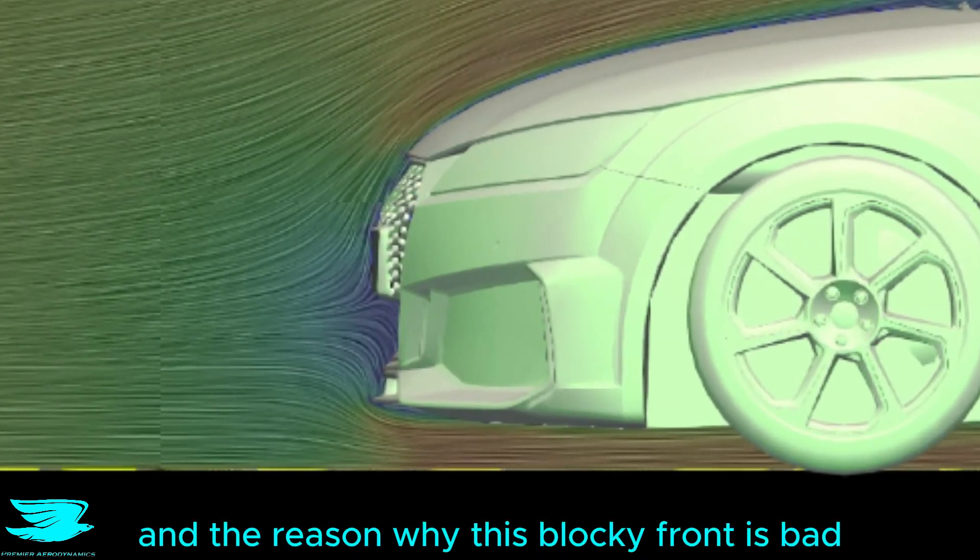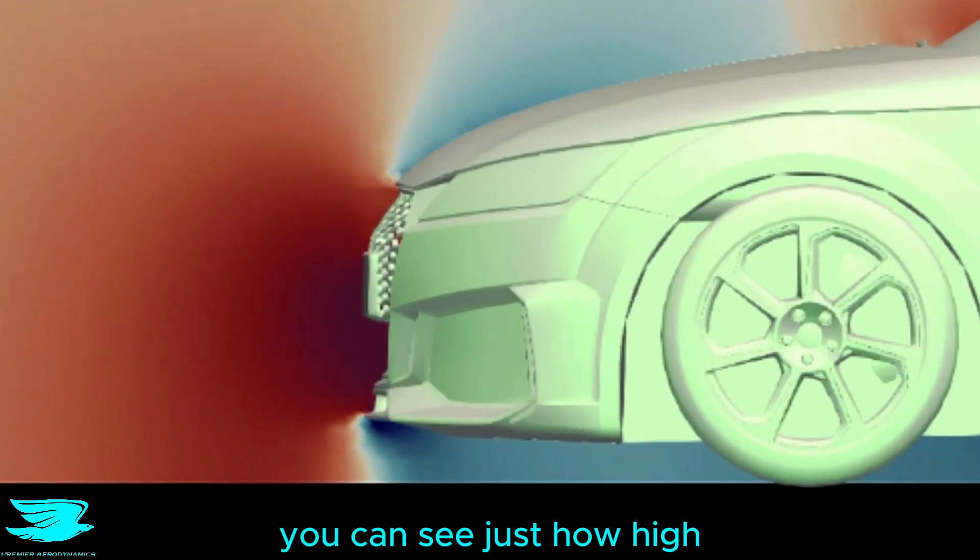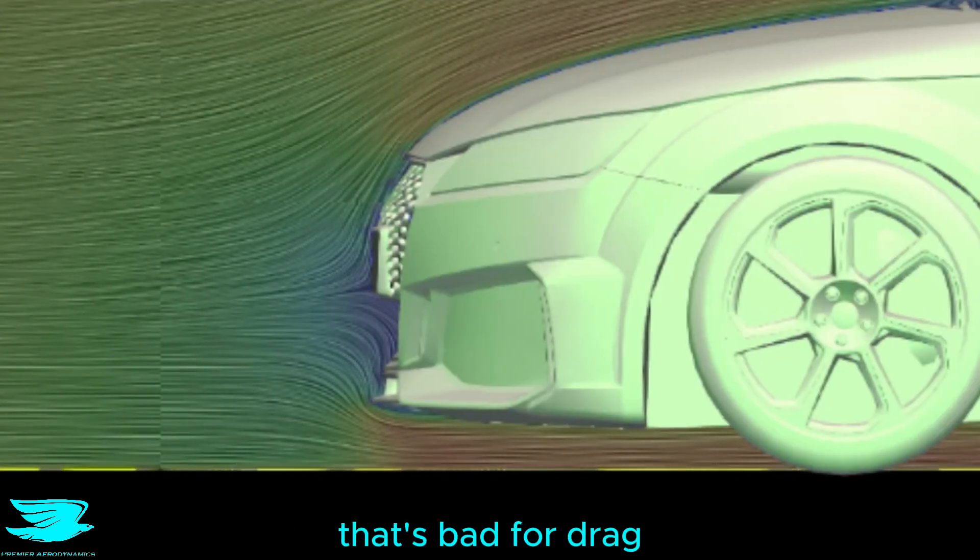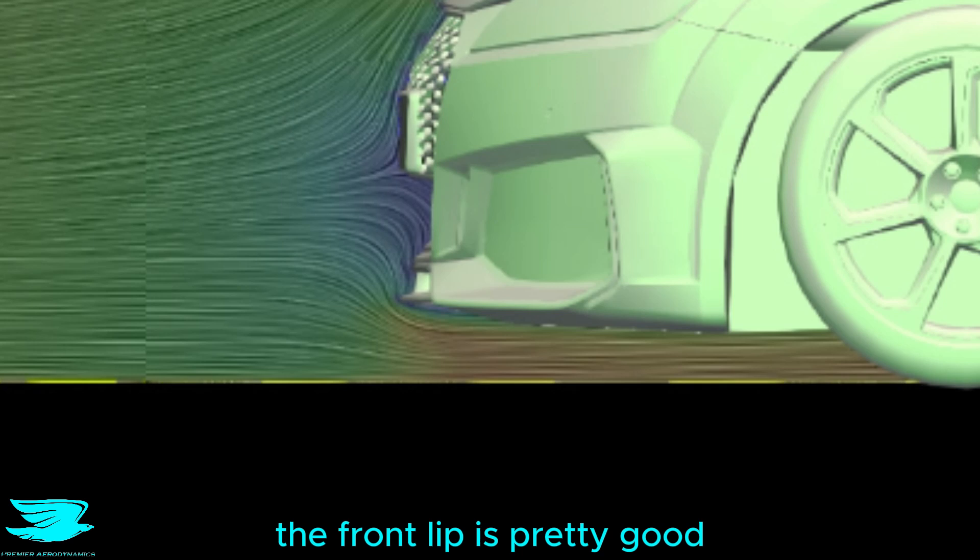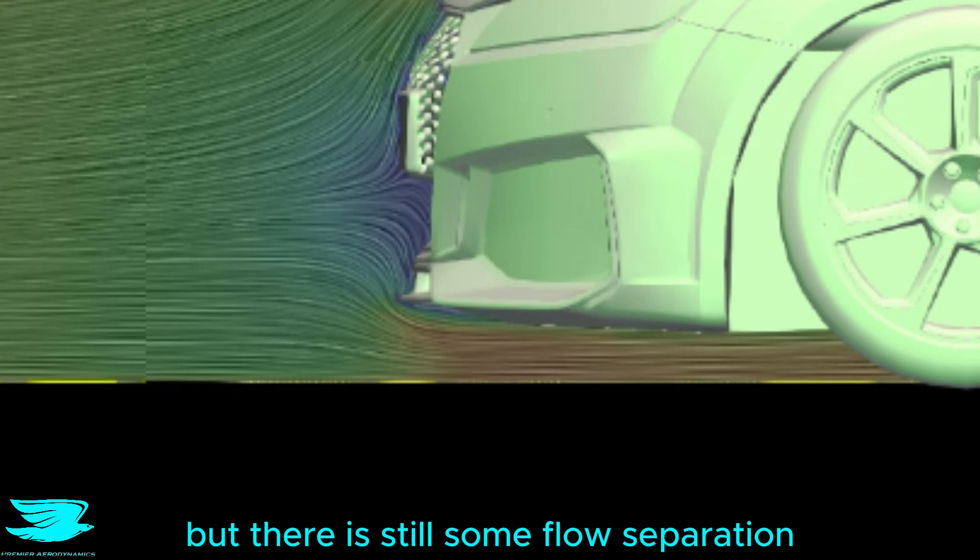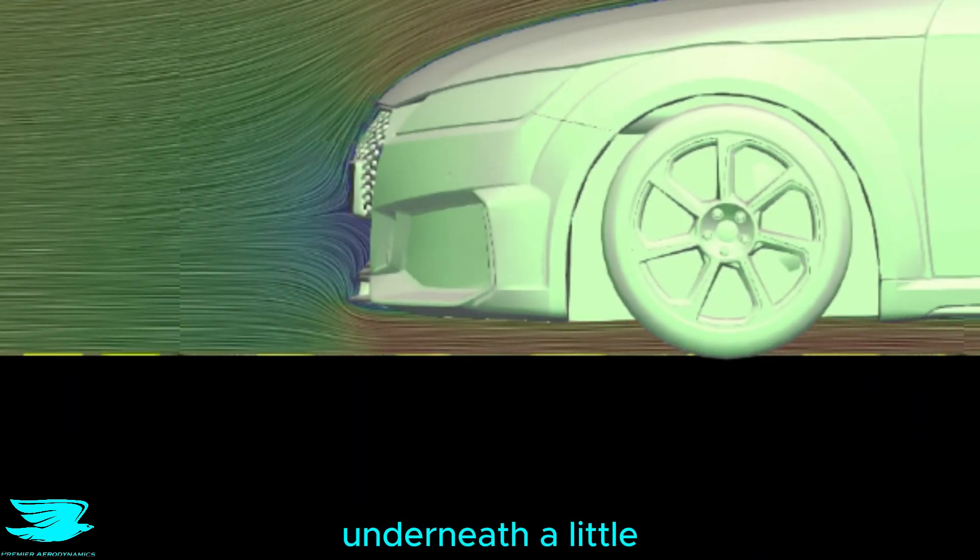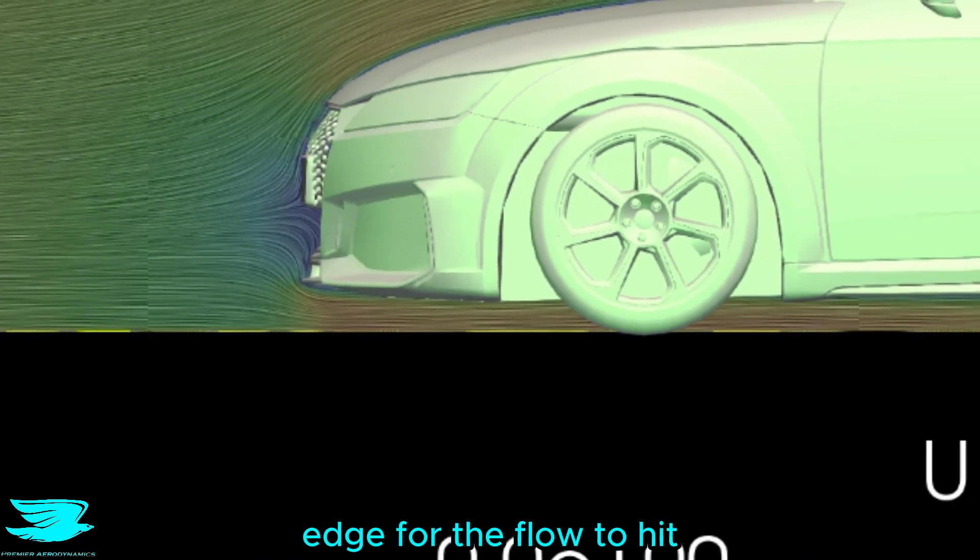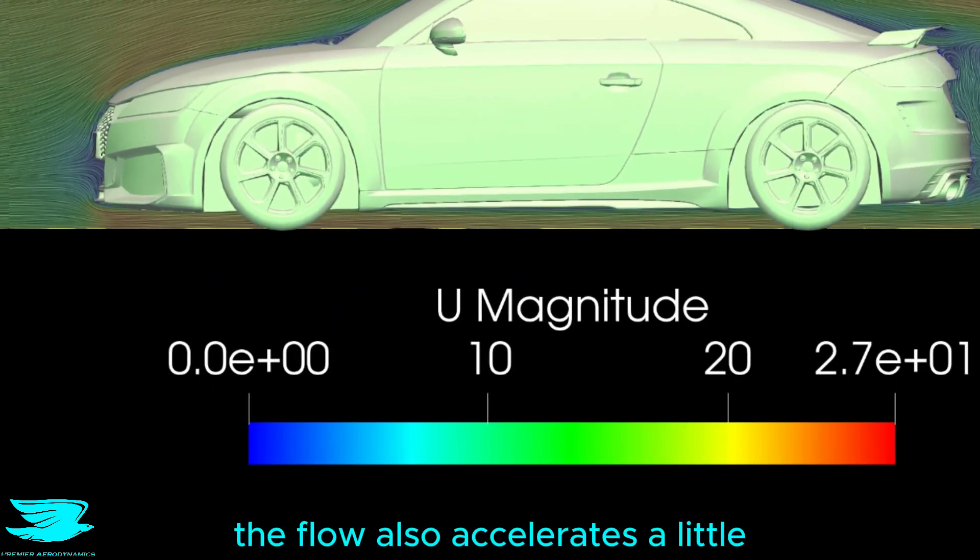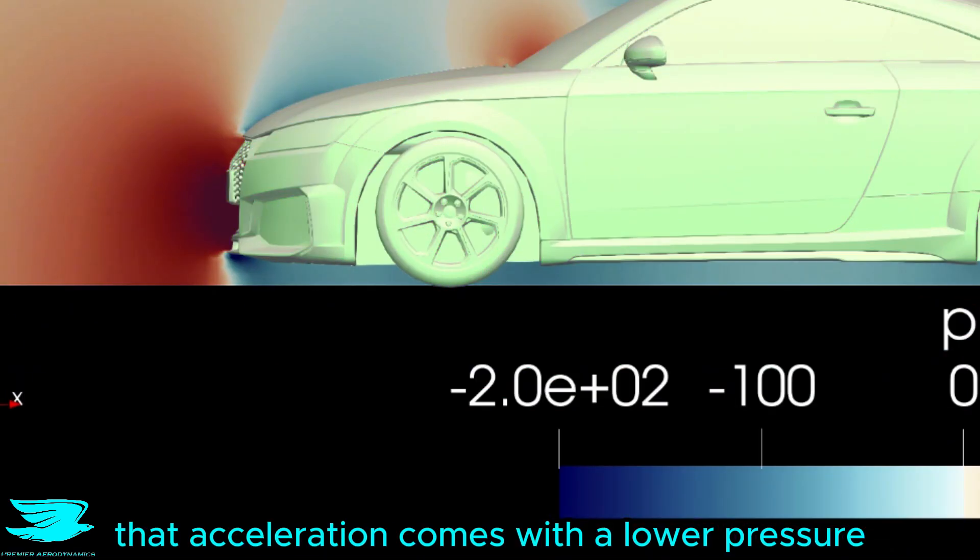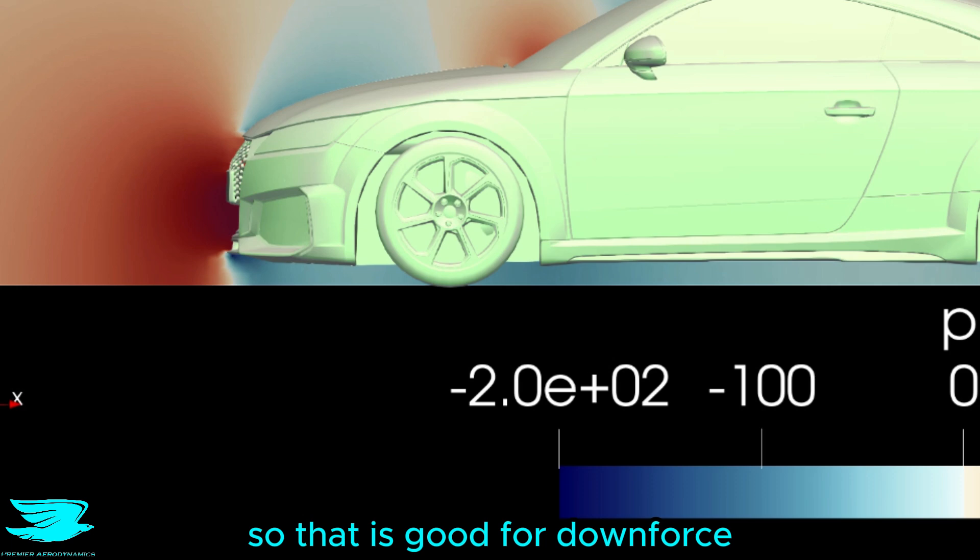And the reason why this blocky front is bad is because you can see just how high the pressure is here. So the air is hitting the front, dumping all its kinetic energy into the car, and trying to push it backwards. That's bad for drag. The front lip is pretty good, not great, because we can see that the flow stays attached over most of it, but there is still some flow separation. A way to mitigate that would be to round the underneath a little, so there isn't just the sharp edge for the flow to hit and separate. The flow also accelerates a little, which is largely because the TT is quite close to the ground. That acceleration comes with a lower pressure, so that is good for downforce.